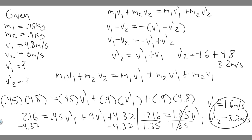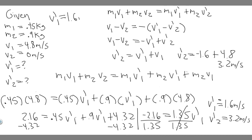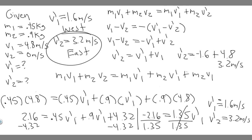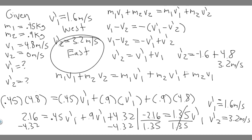These are the speeds, but we also need to specify direction. Since v'₁ is negative and we defined east as positive and west as negative, v'₁ = 1.6 m/s West. Since v'₂ is positive, v'₂ = 3.2 m/s East. So the first object bounces back going west at 1.6 m/s, and the second object moves east at 3.2 m/s. These are your answers.